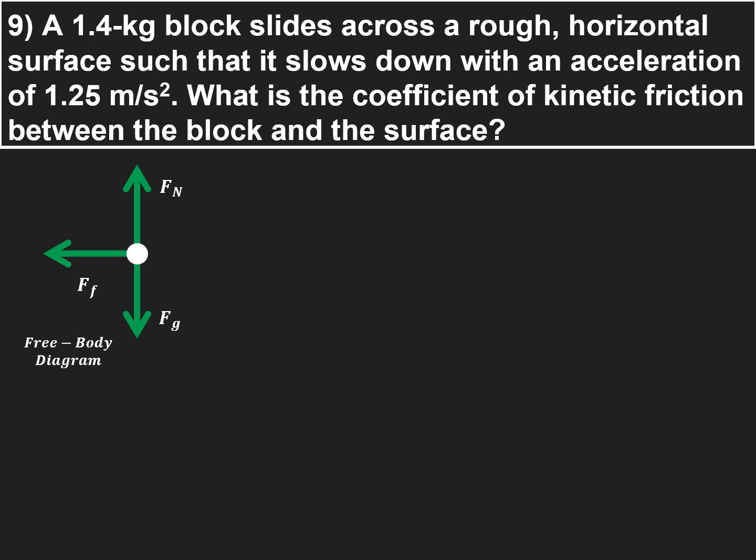So first thing we're going to do is find the normal force. So we're going to use the net force in the y direction. We know the acceleration is going to be horizontal, so there's no vertical acceleration. That means the normal force up minus the force of gravity down is going to be equal to zero. So we go ahead and figure out that force of gravity, which is the mass, which is 1.4 times 9.8. That gives us 13.72 newtons. So the normal force is also going to be equal to 13.72 newtons.